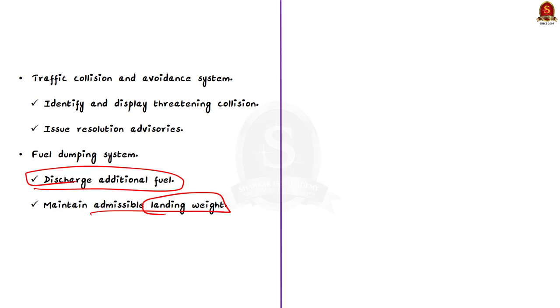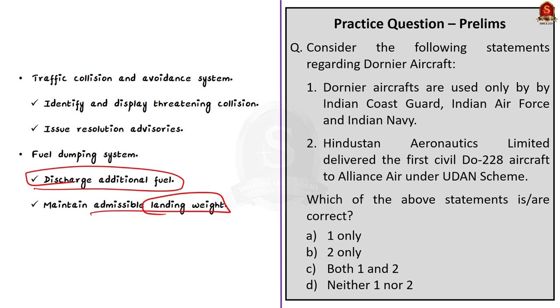So now you know why it has a multi-purpose role. That's all about this news article — a very important one. In this discussion we covered the Dornier 228 aircraft in detail. With these learned points, let us move on to the next news article discussion.